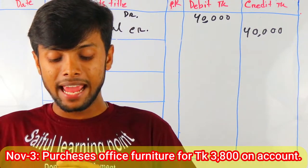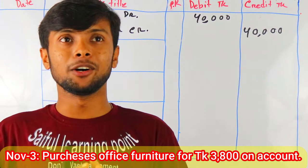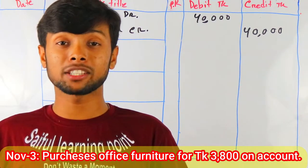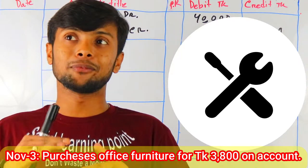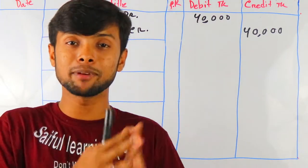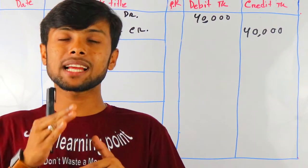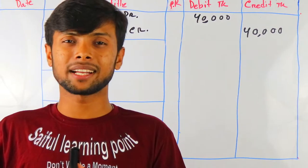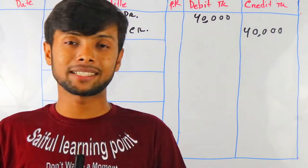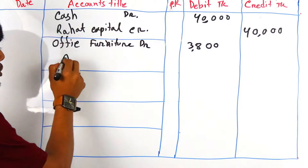Purchases office furniture for taka 38,000 on account. You obviously need to remember what 'on account' means — it means credit purchase, payment not yet made. Furniture is an asset; when an asset increases, it is debited. So we write office furniture debit. The payment is still outstanding — it's payable — so accounts payable credit 38,000.